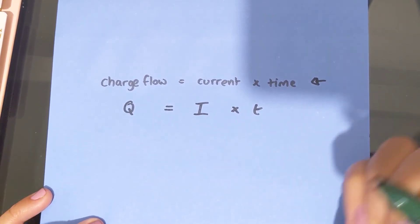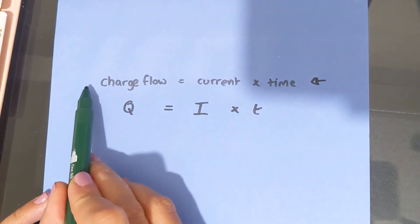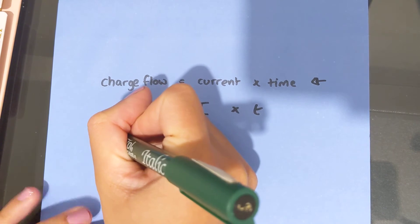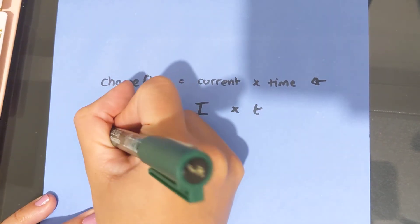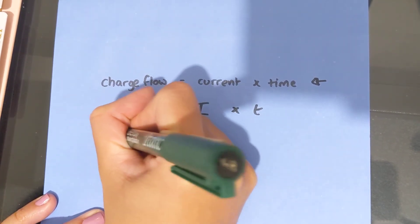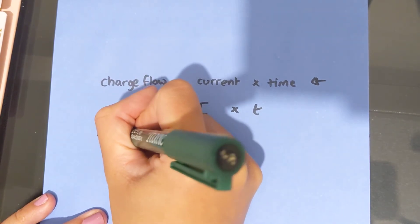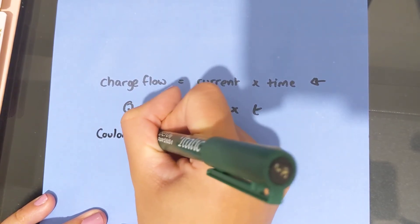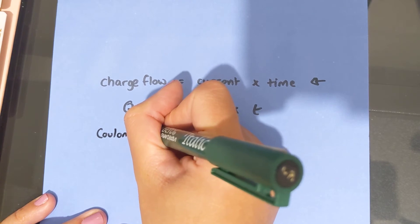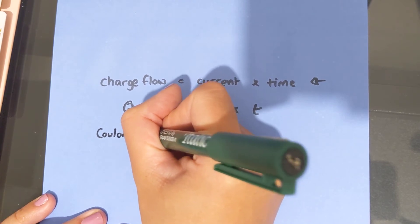So what are the units then? So we've got the equation, we've got the symbols, the units then. The units of charge are coulombs. So this is a funny word, C-O-U-L-O-M-B. And the symbol for a coulomb is a capital C.